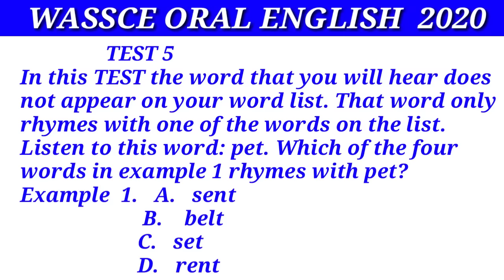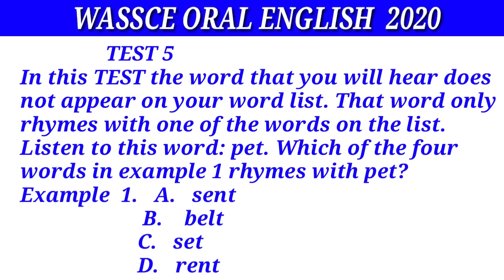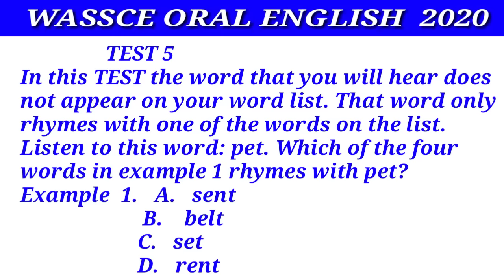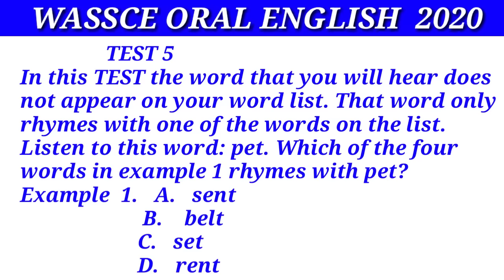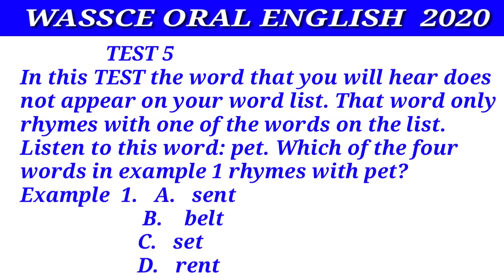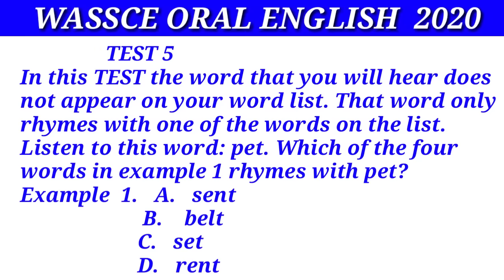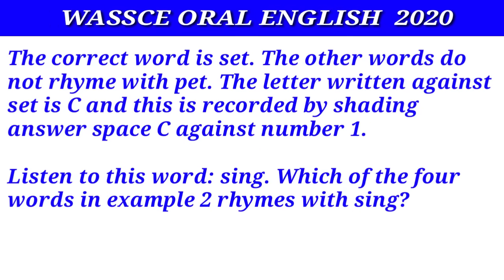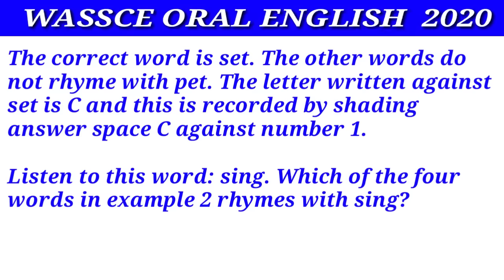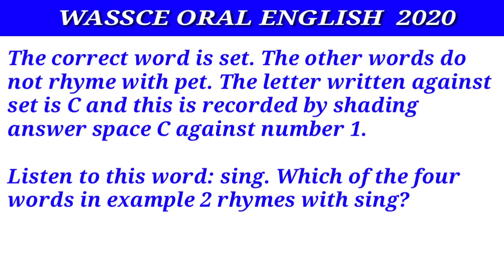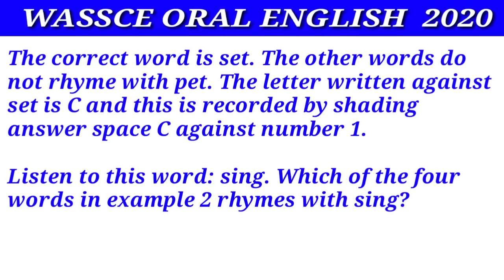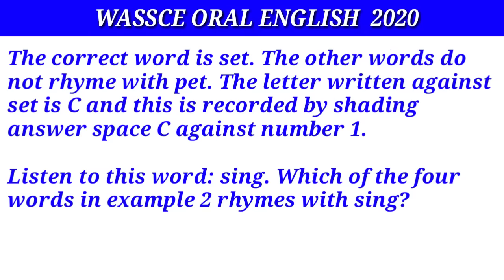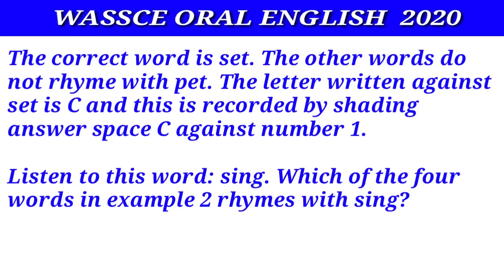Test five. In this test the word you will hear does not appear on your word list. That word only rhymes with one of the words on the list. Example one: listen to this word — pet. Which of the four words in example one rhymes with pet? The correct word is set. The other words do not rhyme with pet. The letter written against set is C, and this is recorded by shading answer space C against number one.